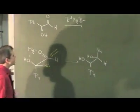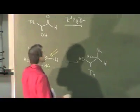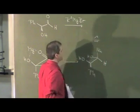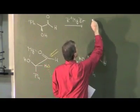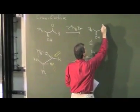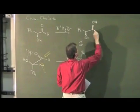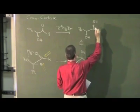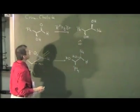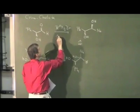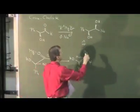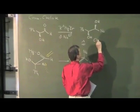which then should result preferentially in this product. And if I redraw this, then this should be the preferred diastereomer, which we will call the Cram-Chelate product.